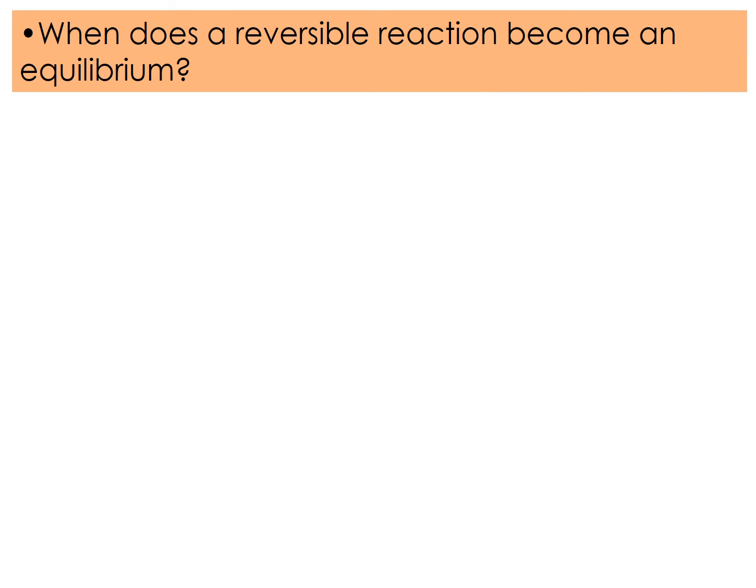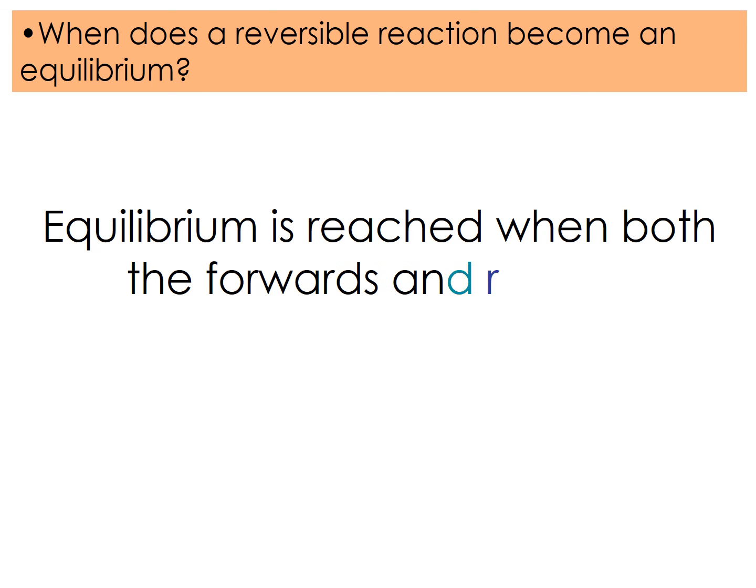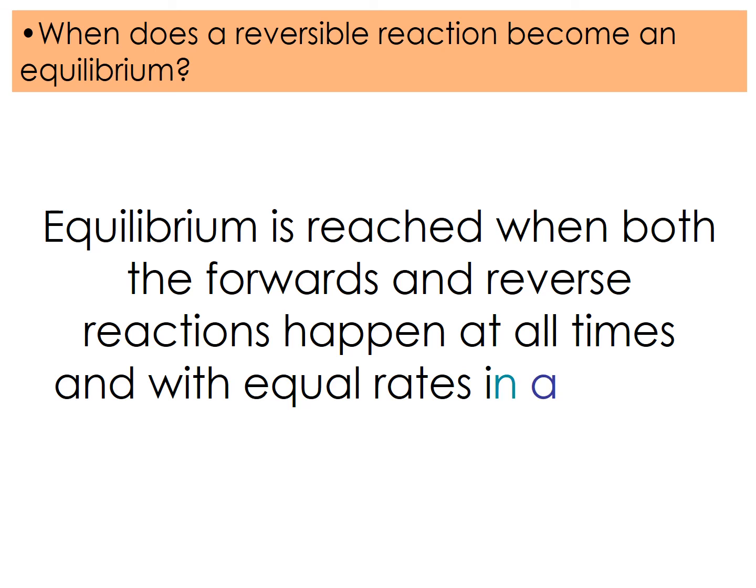So importantly, when does a reversible reaction become an equilibrium? Equilibrium is reached when both the forwards and reverse reactions happen at all times and with equal rates in a closed system.